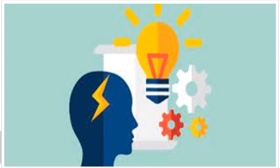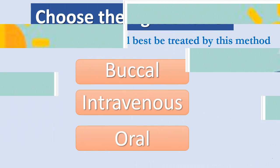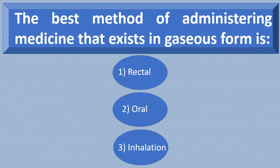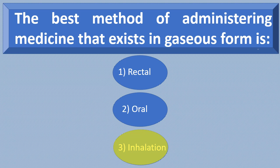Quiz: A vomiting sick person will best be treated by which method? Yes, by the intravenous route. The best method of administering medicine that exists in gaseous form is? Yes, it is inhalation.